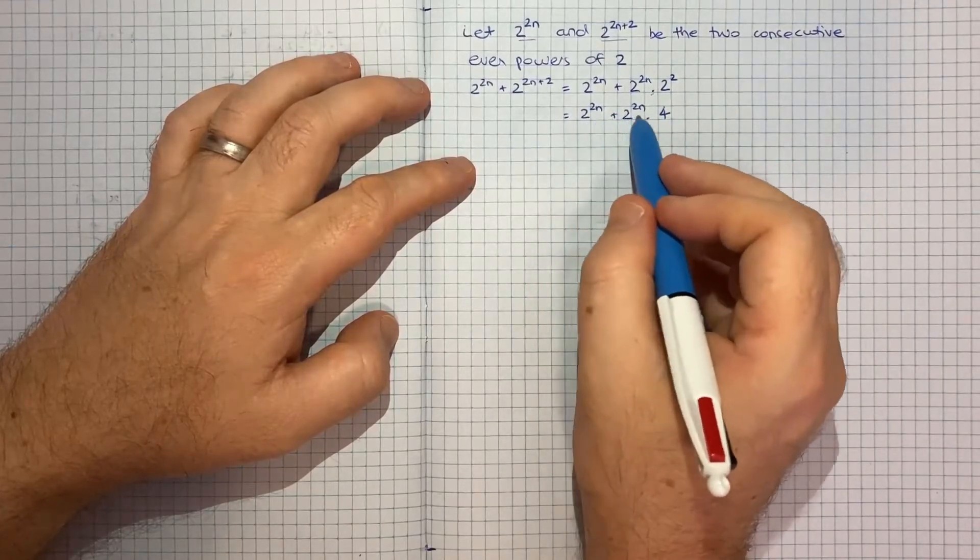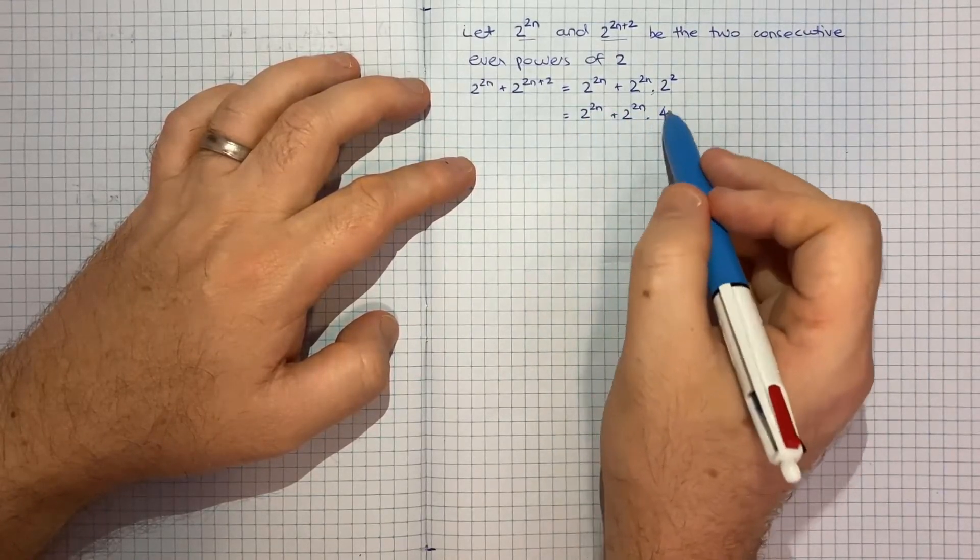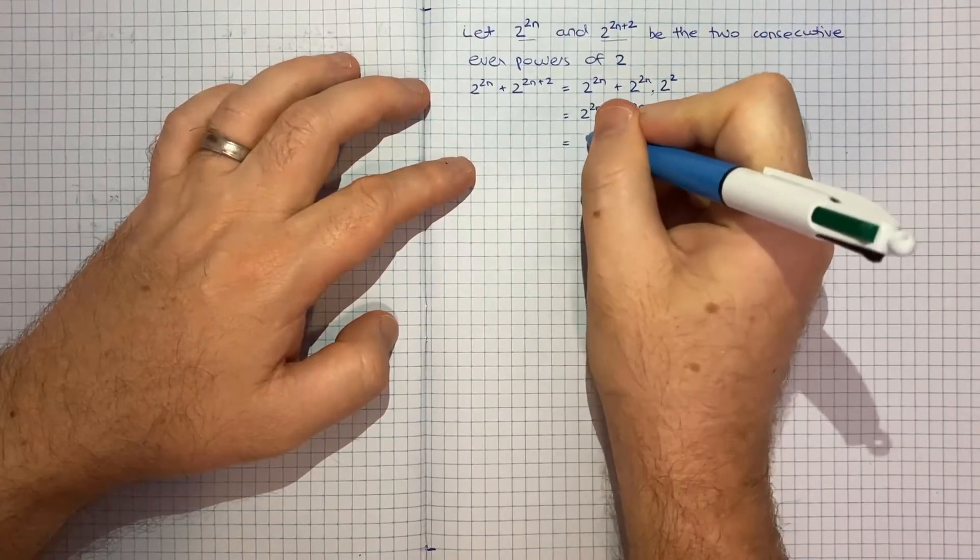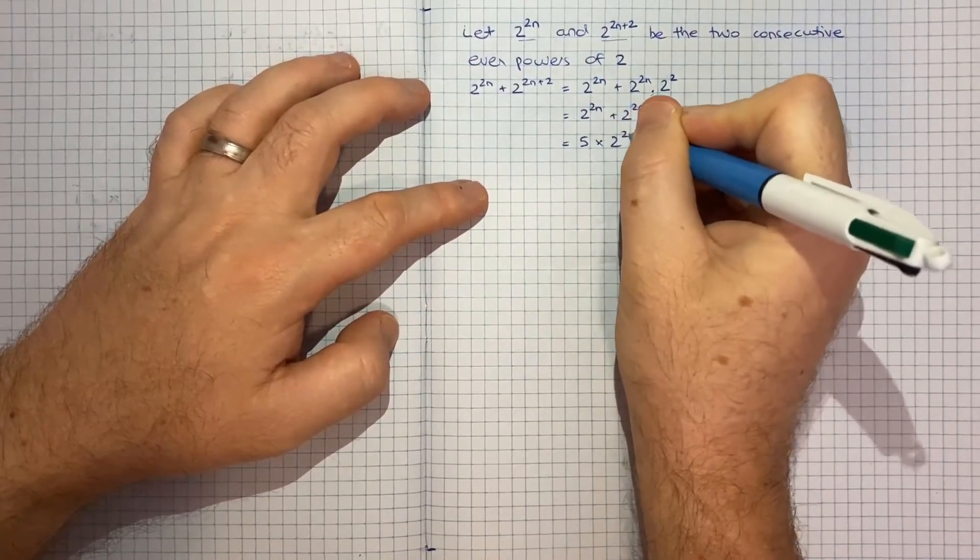That means I've got five of these 2 to the 2n. So I've got four over here and one over here. So that's 5 times 2 to the 2n.